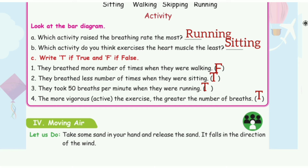True or False. First: they breathe more number of times when they are walking — False. Second: they breathe less number of times when they are sitting — True. Third: they took 50 breaths per minute when they were running — True. Fourth: the more vigorous the exercise, the greater the number of breaths — True.